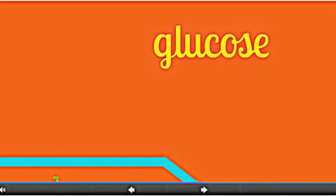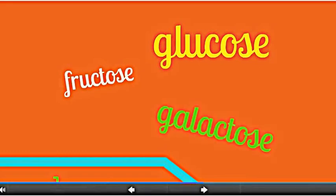Reducing sugars are monosaccharides such as glucose, fructose, and galactose, whose functional carbonyl group is either an aldehyde or ketone.